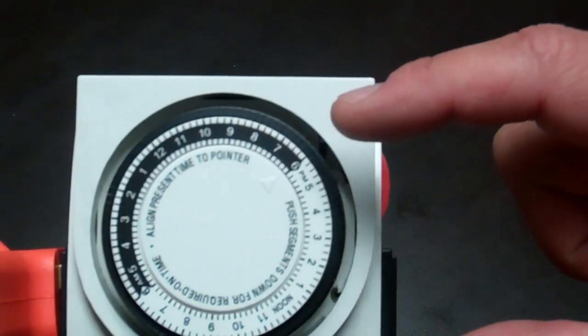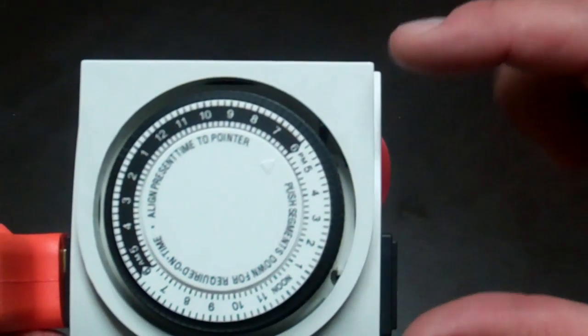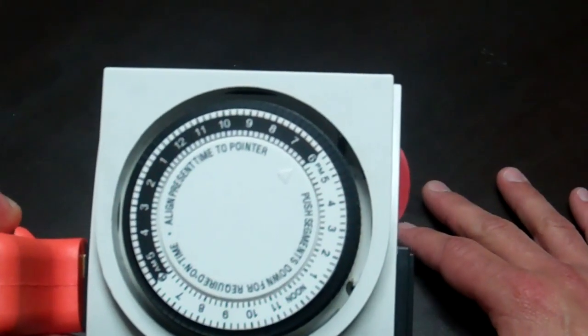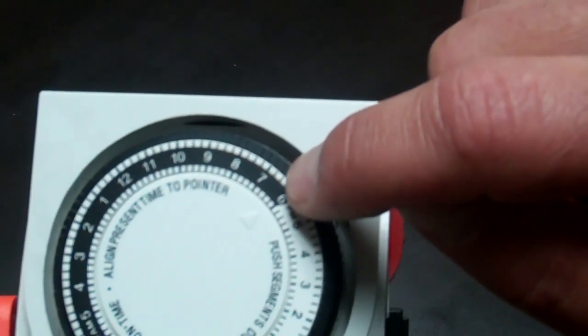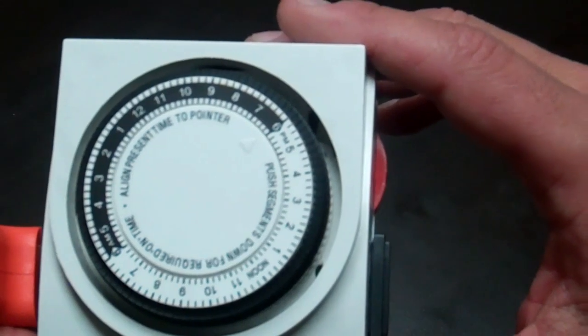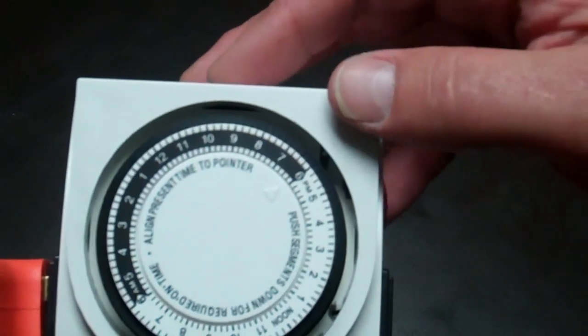Let's set our timer for an 18-hour cycle coming on at 6 p.m. You can see the arrow here is pointing to 6 p.m. That's when we want our lighting system to come on for an 18-hour cycle.